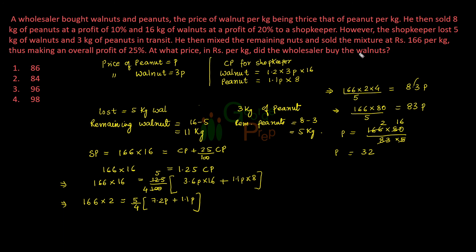So wholesaler has bought walnuts at the price of Rs. 3P per kg. So P is 32, so 3P is 32 times 3, that is Rs. 96 per kg. So answer for this question is 96.